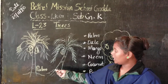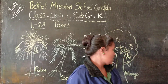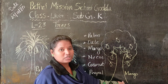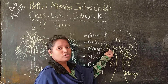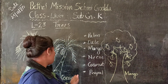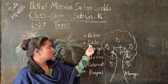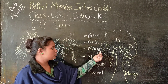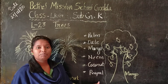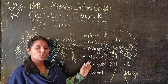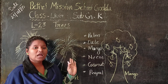Here I have drawn a palm tree, here a coconut tree, and this is a mango tree. Mango tree gives us fruits, and coconut also gives us fruit. So we learn one by one: palm tree, date tree, mango tree, neem tree, coconut tree, and peepal tree. There are different types of trees, and each tree gives us many kinds of fruits.